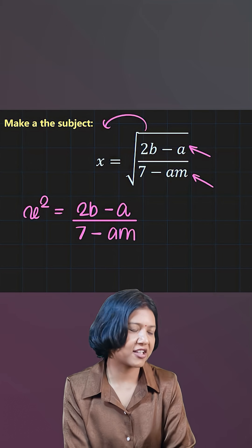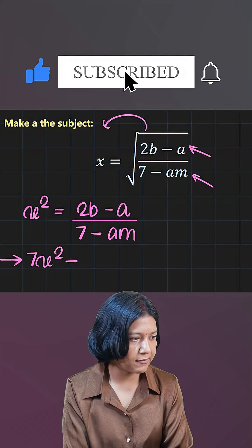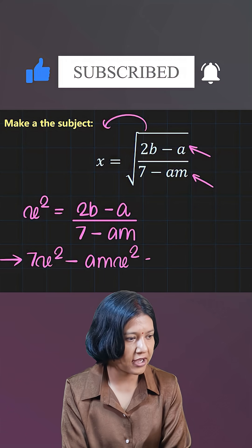You should always take it to the other side and cross multiply. The 7 multiplies with x square gives 7x squared. Am multiplies with x square gives you amx squared. And on the right side you have 2b minus a.